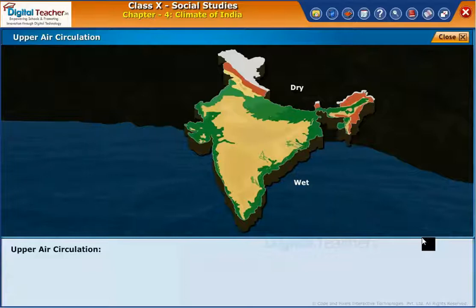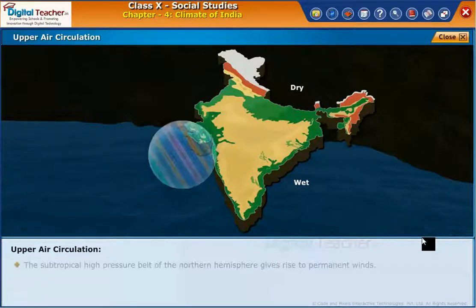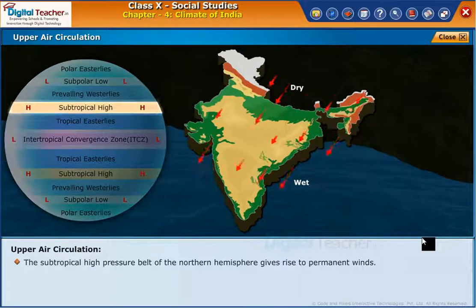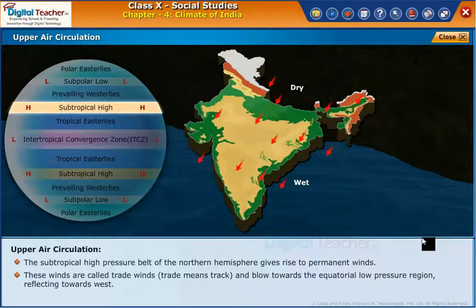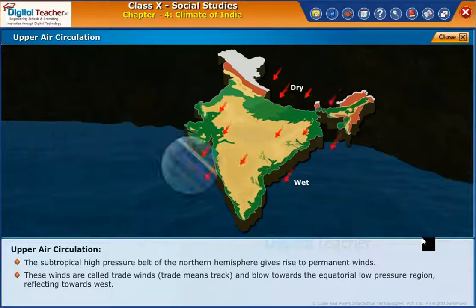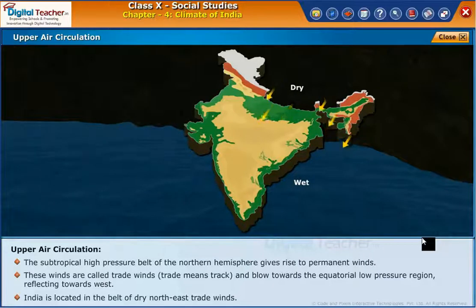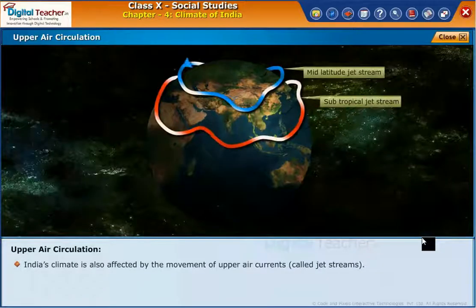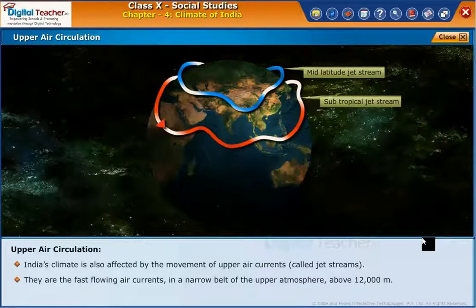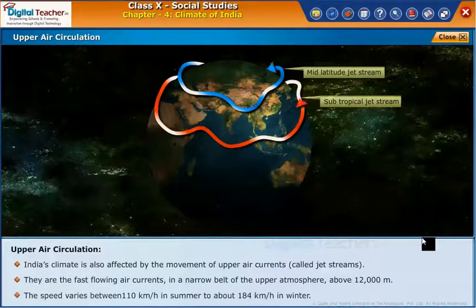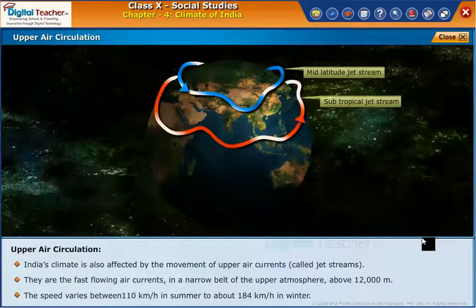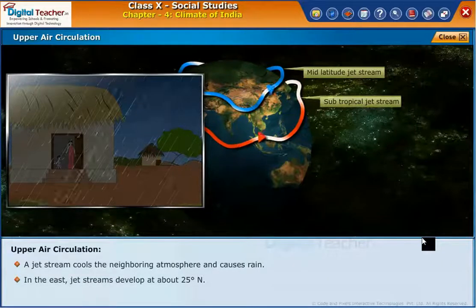Let us know about another factor influencing climate: upper air circulation. The subtropical high pressure belt of the northern hemisphere gives rise to permanent winds called trade winds. Trade winds blow towards the equatorial low pressure region, deflecting towards the west. India is located in the belt of dry northeast trade winds. India's climate is also affected by the movement of upper air currents called jet streams — fast flowing air currents in a narrow belt of the upper atmosphere at about 12,000 meters. Their speed varies between 110 kilometers per hour in summer to about 184 kilometers per hour in winter. A jet stream cools the neighboring atmosphere and causes rain. In the east, jet streams develop at about 25 degrees north.